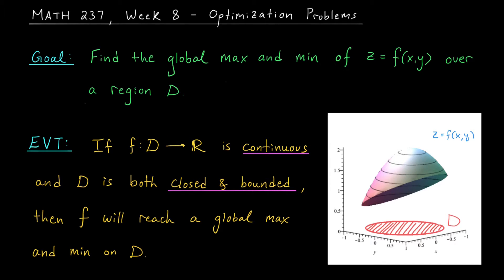and the set D is both closed and bounded, meaning it contains its boundary points and it doesn't extend off forever in some direction, then your function f will indeed reach a global max and global min somewhere throughout your region.